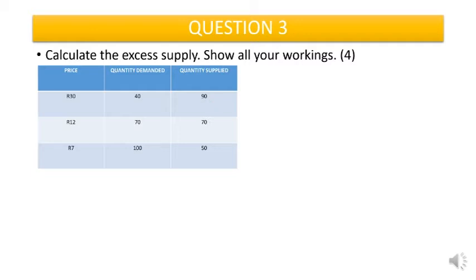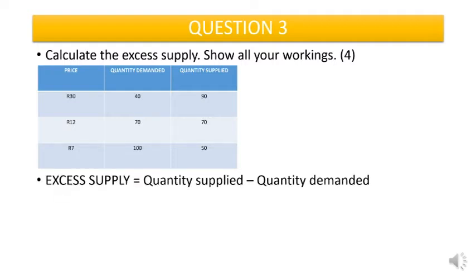How do we calculate excess supply? Excess supply is equal to quantity supplied minus quantity demanded. Quantity supplied is equal to 90, quantity demanded is equal to 40. So 90 minus 40 is 50, meaning our excess supply is 50.